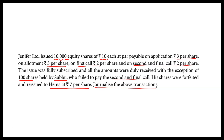We will cover journal entries one by one. For the second and final call, 100 shares were not paid, so out of 10,000 shares, 9,900 shares paid the second and final call. The remaining 100 shares will be subject to forfeiture and re-issue entries.